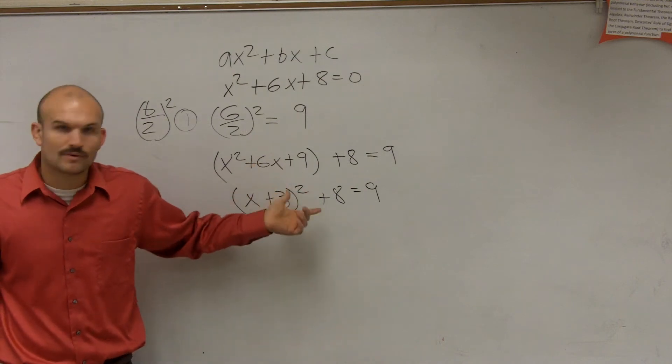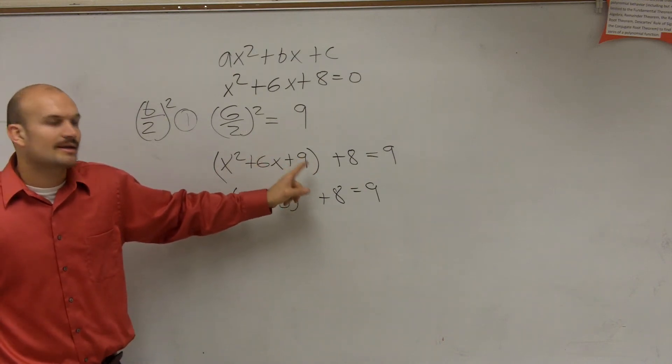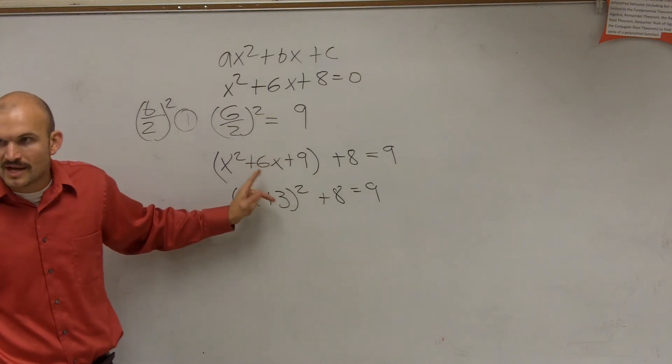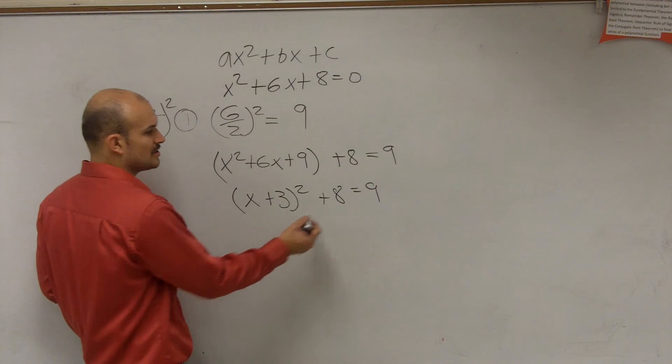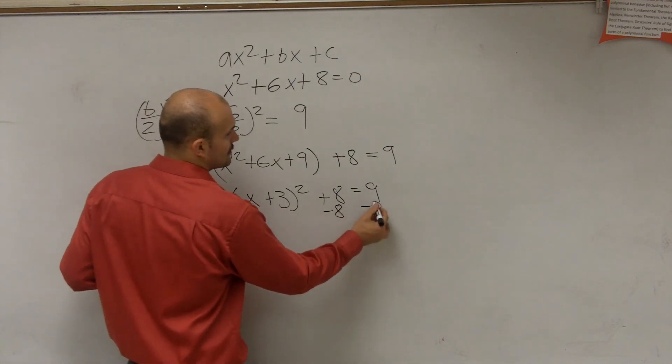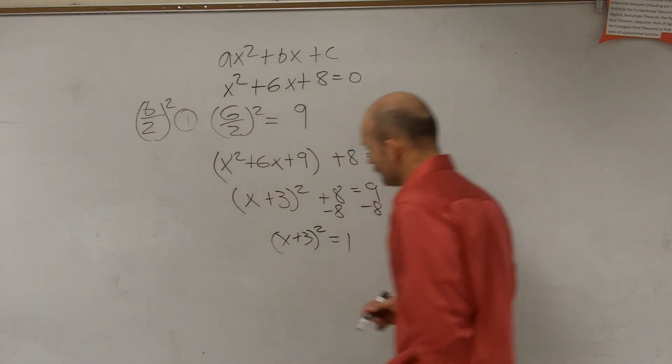So you got to know your perfect squares. You got to be able to look at a perfect square and say, oh, that's a square number and this is double that square, the square of the number. Therefore, now we just use our inverse operations. So you have x plus 3 squared equals 1.